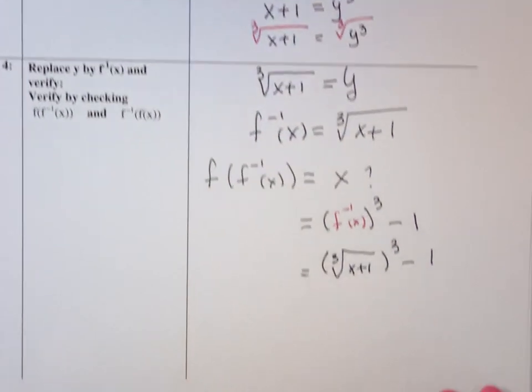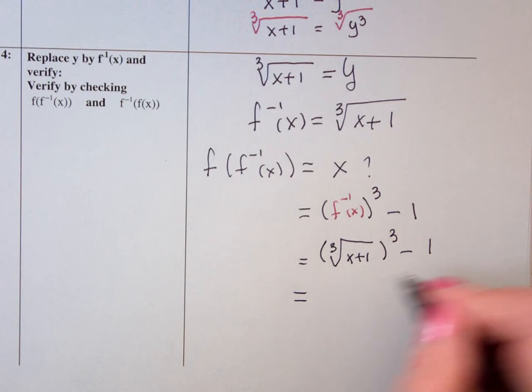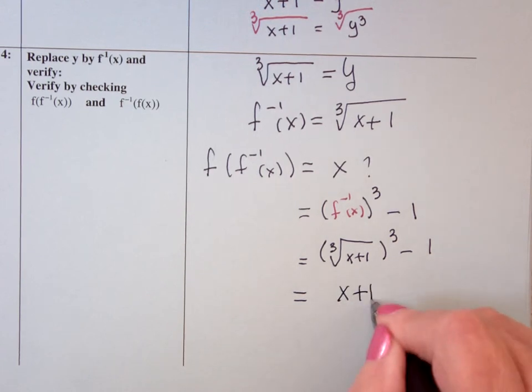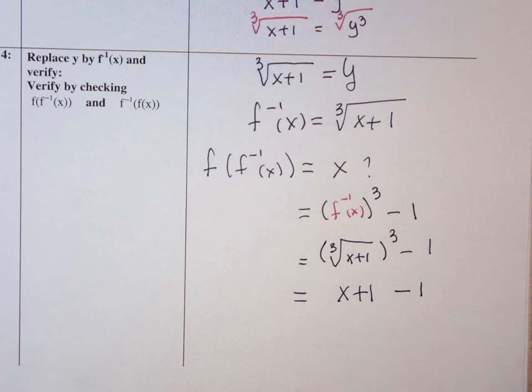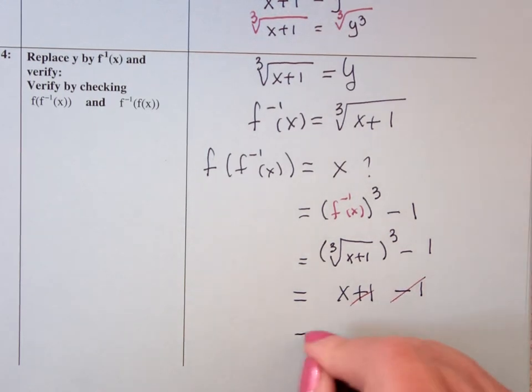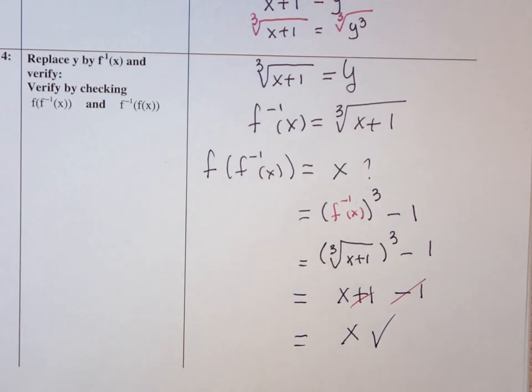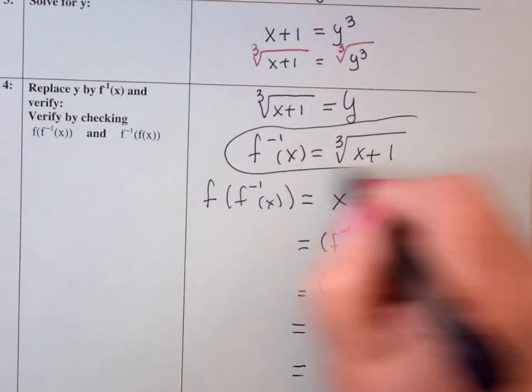The cube root of x plus 1 cubed is x plus 1 minus 1. Add to 0 and you're left with x and it verifies. So that says indeed, there's the inverse.